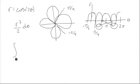So we're going to have the integral from negative pi fourths to pi fourths of cosine squared 2 theta all over 2 d theta.